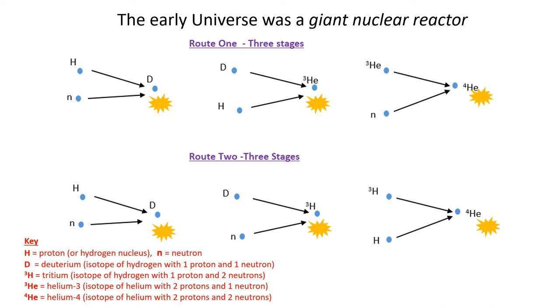If you look at this diagram here, it shows how helium can be made from hydrogen in the early universe. The first stage is—remember that the universe was a sea of protons and neutrons and other particles—so a proton or hydrogen nucleus combines with a neutron to form deuterium or heavy hydrogen. This has one proton and one neutron in its nucleus.